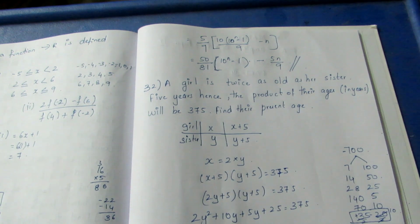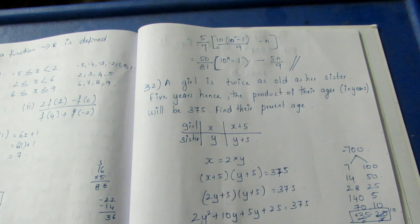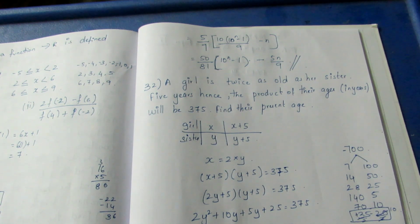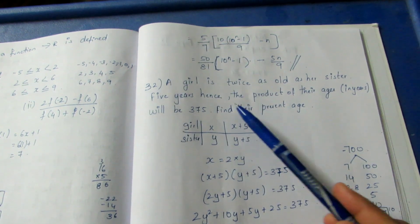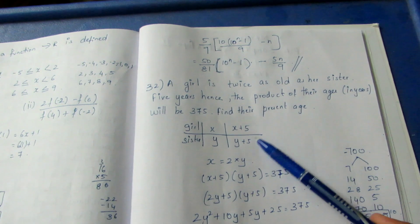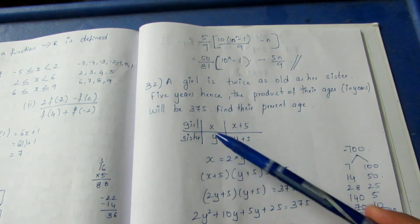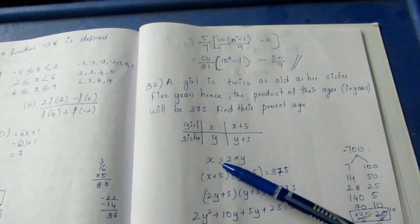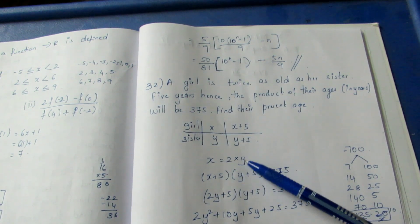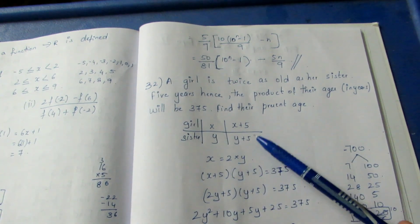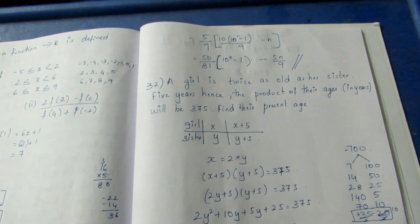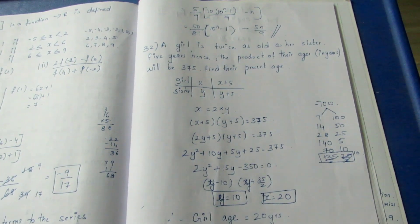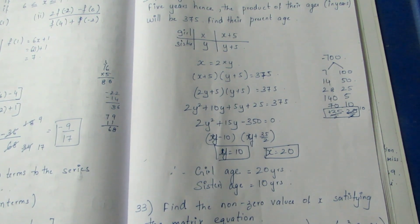Question 30: A girl is twice as old as her sister. Five years hence, the product of their ages will be 375. Find their present ages. Let the girl's age be x and sister's age be y. Substituting x = 2y, and solving: girl's age is 20 and sister's age is 10.